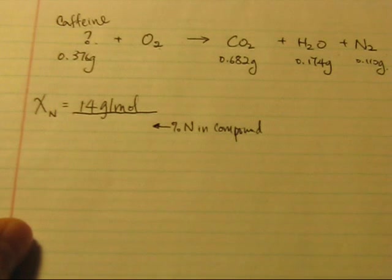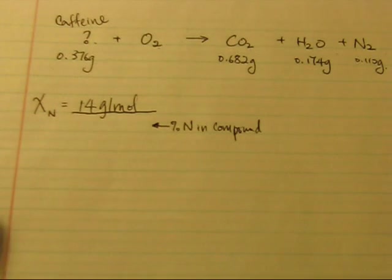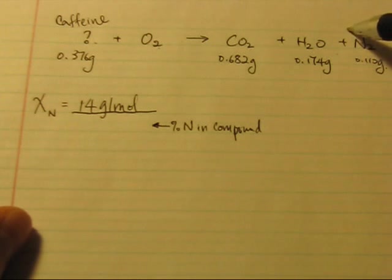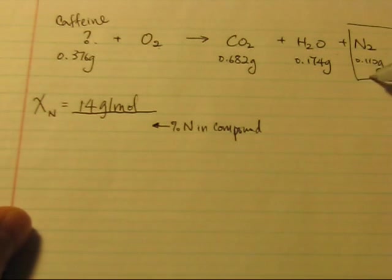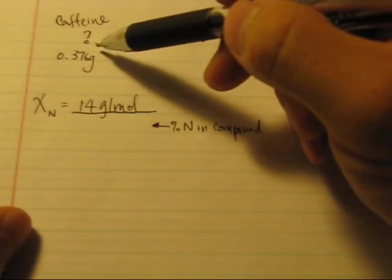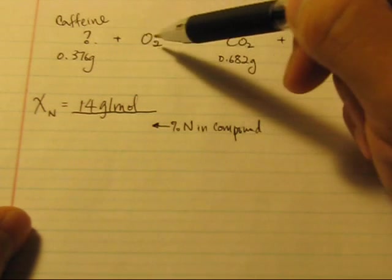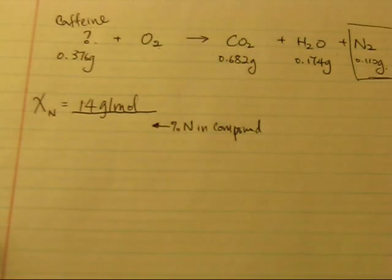But it is not given in the question, so that means we have to find out. Now as you can see here, all of the nitrogen atoms in the N2 is coming from the caffeine, because the oxygen doesn't contain any nitrogen. So the nitrogen atoms must come from the caffeine.